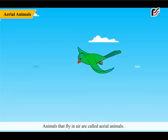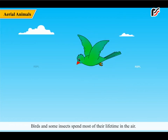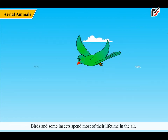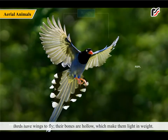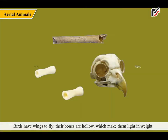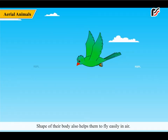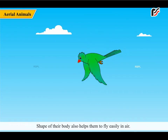Animals that fly in air are called aerial animals. Birds and some insects spend most of their lifetime in the air. Birds have wings to fly. Their bones are hollow which make them light in weight. The shape of their body also helps them to fly easily in air.